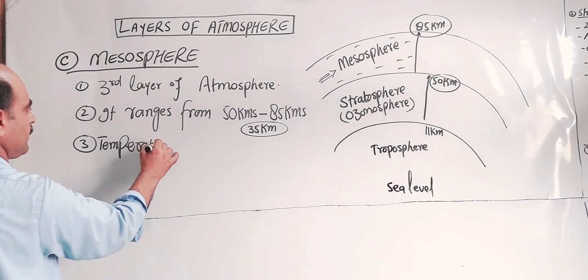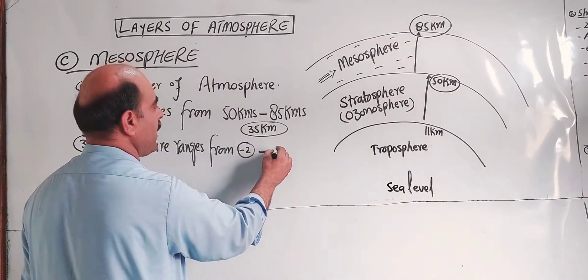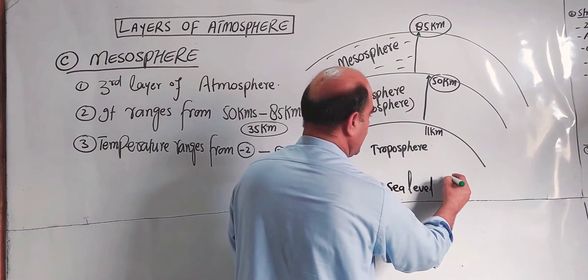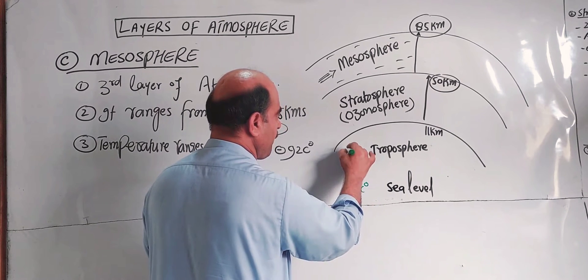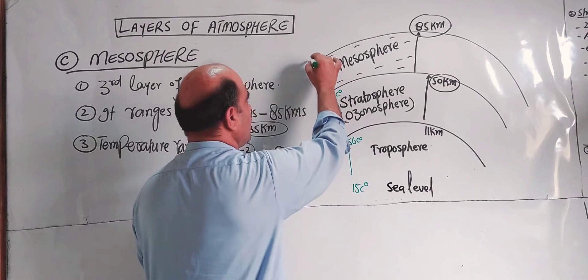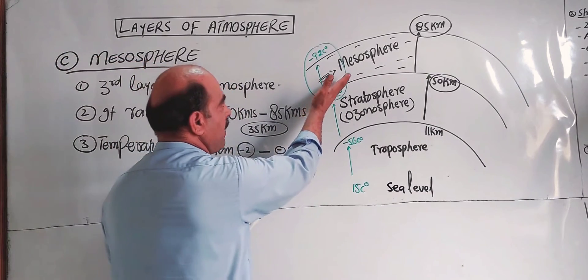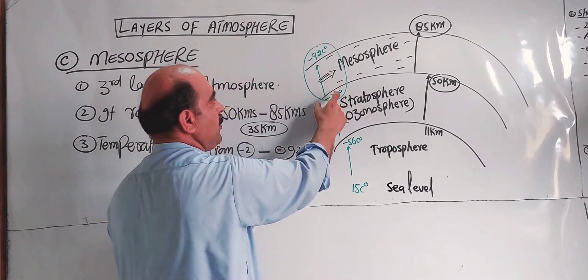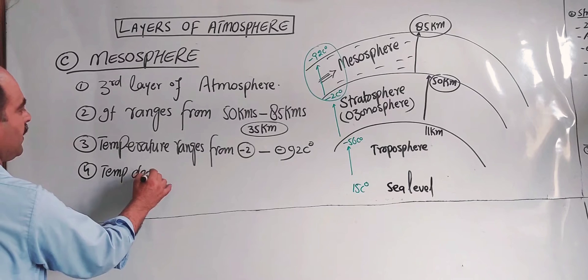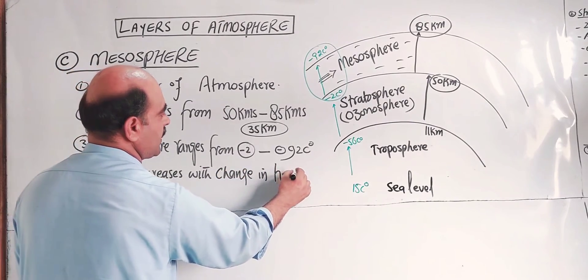The temperature in the mesosphere ranges from minus 2 degrees at the bottom to minus 92 degrees Celsius at the top. Temperature decreases with change in height — that is, temperature decreases with altitude or with change in height.